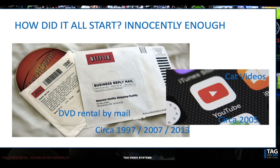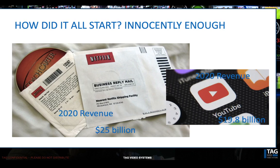It all started innocently enough. A little company called Netflix back in 1997 — cunningly named — whose real business was mailing DVDs out for rental. They used that revenue to fund development of distribution over the internet, hence the name Netflix. In 2007 they went live on the internet with a VOD library and a very large catalog of content. In 2013 they became a content producer, and as everyone knows, they've become a major source of content in the media world. Around the same time, YouTube started up around 2005, based on cat videos. The 2020 revenue for Netflix: $25 billion. YouTube, a close second at $19.8 billion. This technology of over the top — there's clearly something there we should pay attention to.